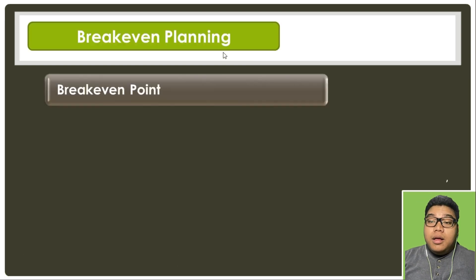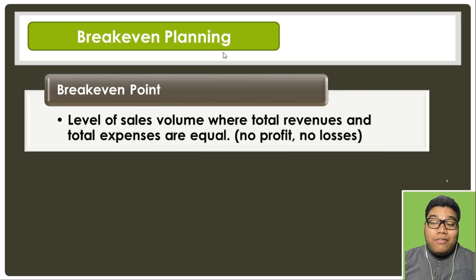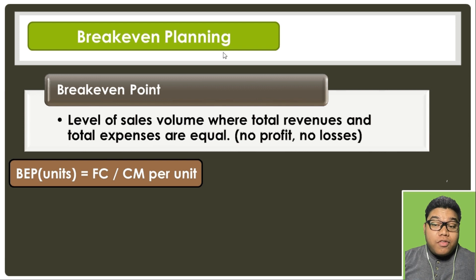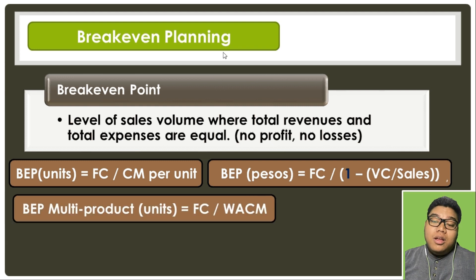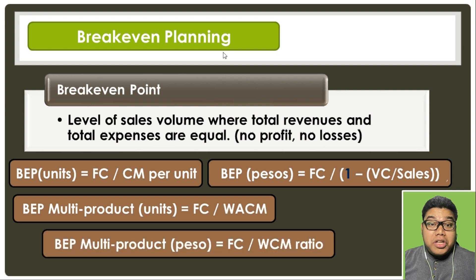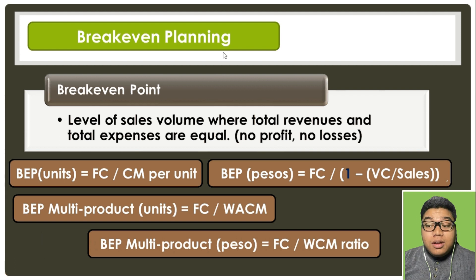The break-even point is the level of sales volume where total revenues and total expenses are equal — the point where there is neither profit nor loss. To compute break-even in units: fixed cost ÷ contribution margin per unit. In pesos: fixed cost ÷ contribution margin ratio (which equals 1 − variable cost/sales). For a multi-product firm, we divide fixed cost by the weighted average contribution margin; in pesos, we use the weighted contribution margin ratio as the denominator.